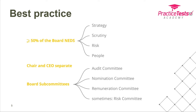Another key principle is that the chairperson — who runs the board — and the CEO — who manages the executives — should be separate roles held by two separate people. Combining the roles is a lot of work for one person, puts an awful lot of power into one pair of hands, and compromises the ability to keep respective responsibilities apart. Keeping them separate means the board and the executive function operate more independently and more effectively.